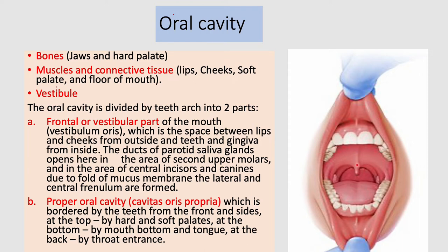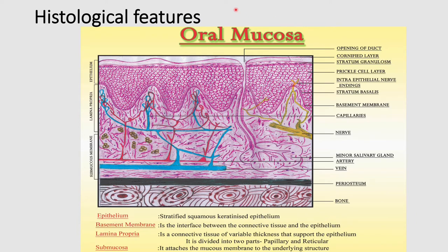The proper oral cavity, called cavitas oris propria, is bordered by the teeth from the front, at the top by the hard palate and the soft palate, and at the bottom by the floor of the mouth and the tongue. Behind, there is the entrance to the throat, or the posterior pharyngeal wall.